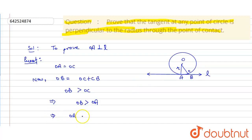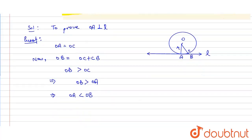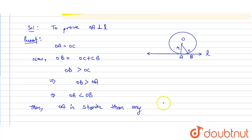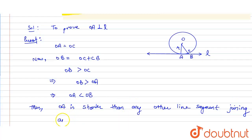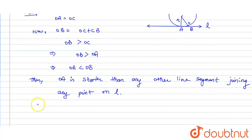Since OA equals OC, we have OB greater than OA as well. As B is an arbitrary point on tangent L, OA is shorter than any other line segment joining O to any point on the given line L.